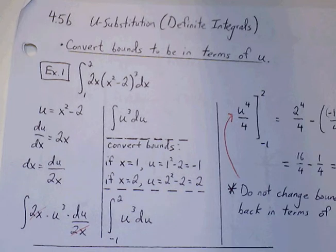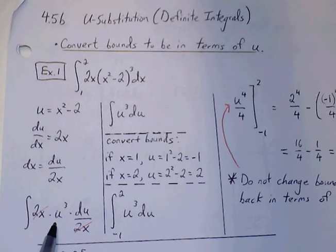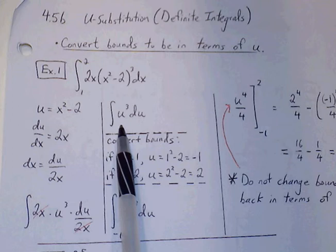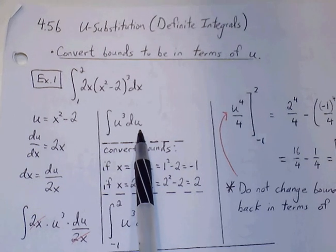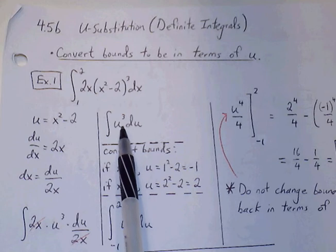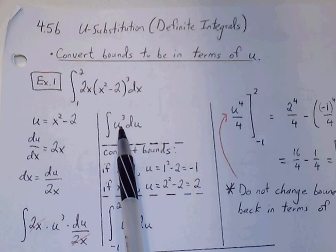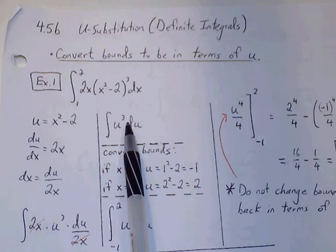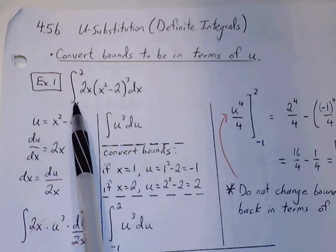Parentheses gets replaced with u cubed. dx gets replaced with du over 2x. The 2x conveniently cancels out. So we have integral of u cubed du. Now, we have to also, we're going to find the antiderivative, but we have to deal with these bounds.